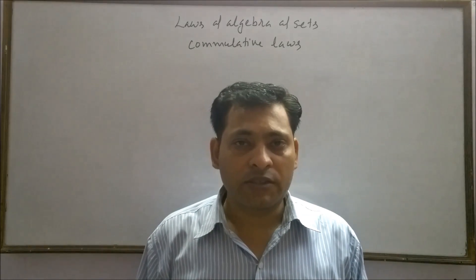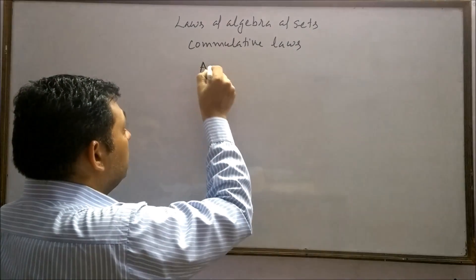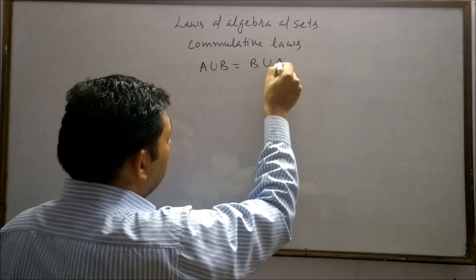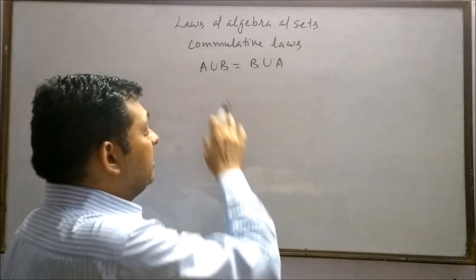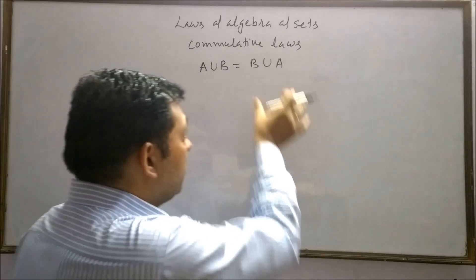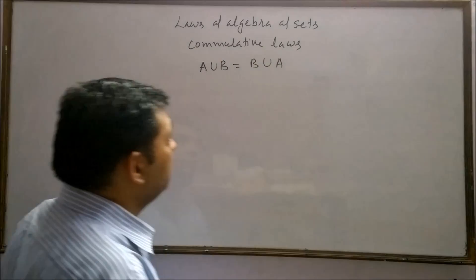Now I will discuss commutative law for union. A union B equals B union A. Commutative law states that before and after reversing the order, the result is same. Here we have reversed the order: B union A.